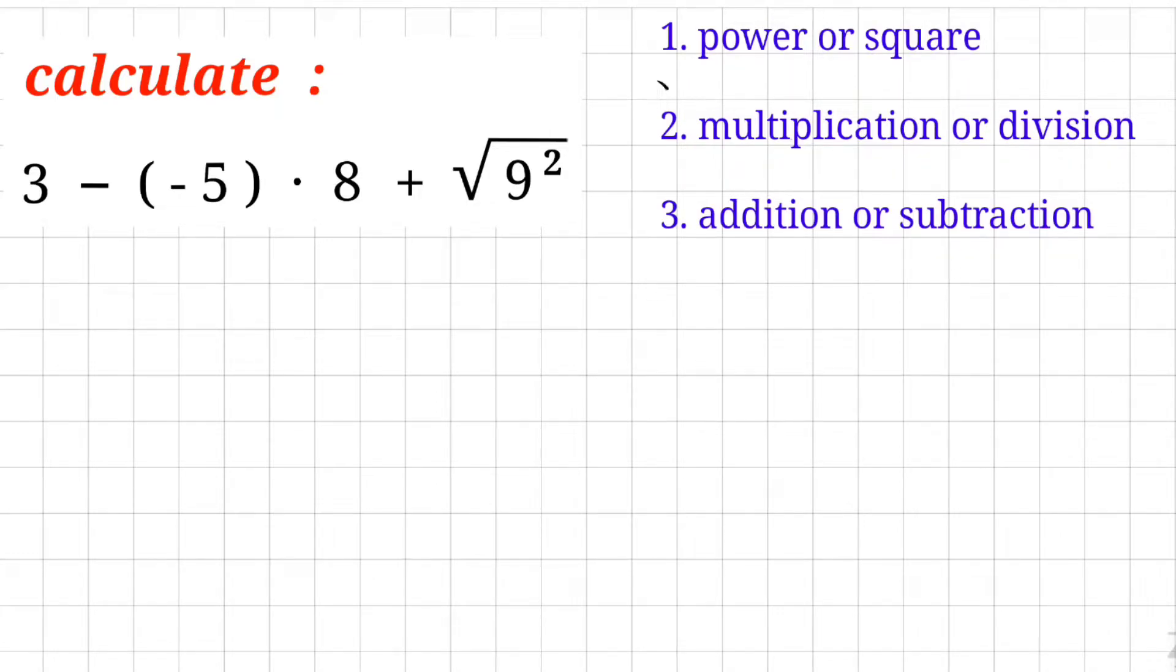The first step is to find the powers or the squares. Of course, there is a power in our problem, that is 9 to the power of 2. There is also a square, that is square root of 9 to the power of 2.